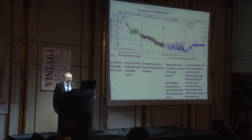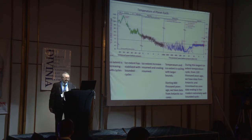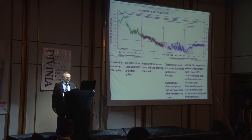2,000 years ago there was a Roman warm period, and it got cold. 1,000 years ago there was a Medieval warm period, and it got cold — that was a little ice age. It's a natural cycle, and we didn't cause it.